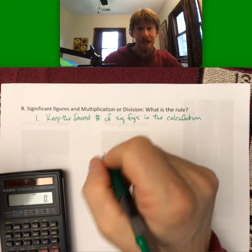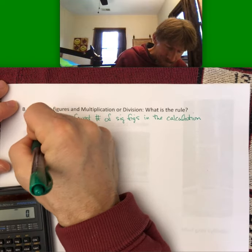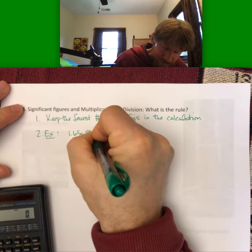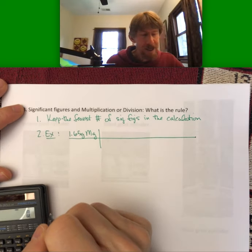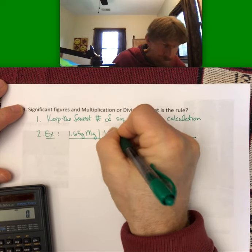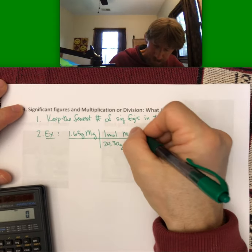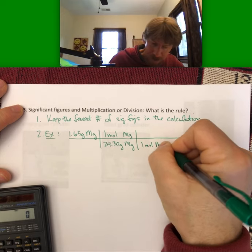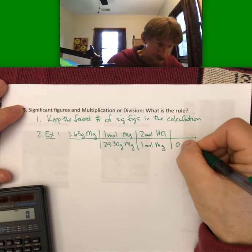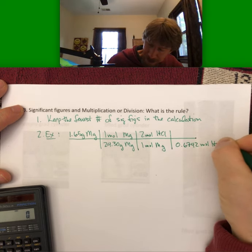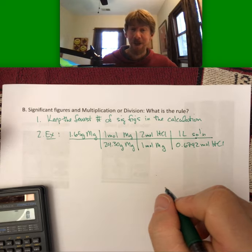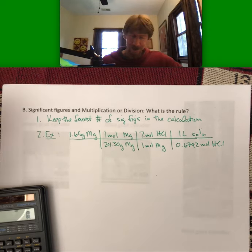Now I'm going to set up a typical chemistry calculation. It's not going to make sense to us yet, but we might have 1.65 grams of magnesium and use the molar mass of magnesium, which is 24.30 grams per mole. There might be a reaction showing that for every one mole of magnesium there are two moles of hydrochloric acid, and then 0.6742 moles of HCl per one liter of solution. This calculation has lots of numbers we'll see, so it's good practice.